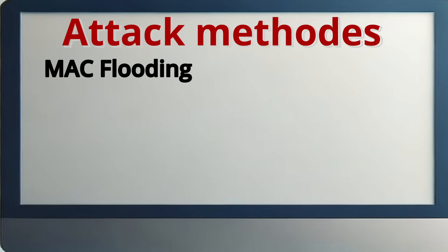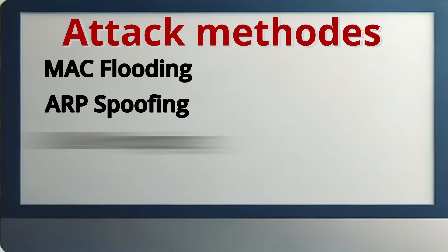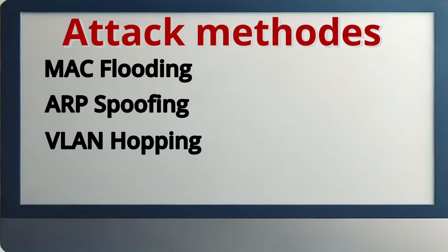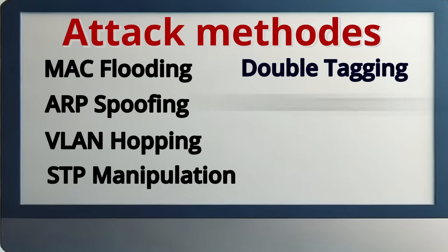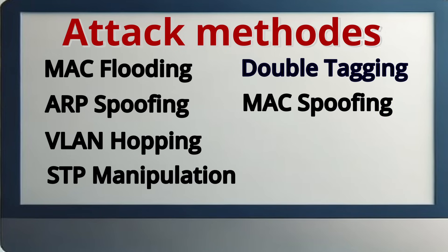In this lesson, we'll go over the following attack methods: MAC flooding, ARP spoofing, VLAN hopping, STP manipulation, double tagging, and MAC spoofing in regard to Layer 2 switches. Remember, Layer 2 switches understand Ethernet frames at the OSI data link layer.